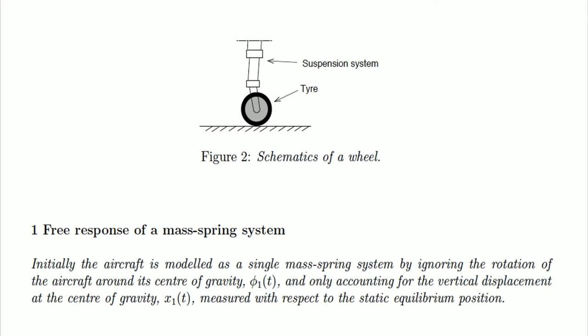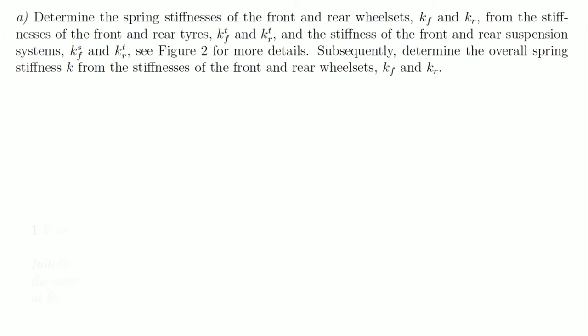This exercise is about free response of a mass-spring system. In part A, I have to calculate the equivalent K of each wheel set, front and rear. And after that, we calculate the equivalent K of all the airplane.